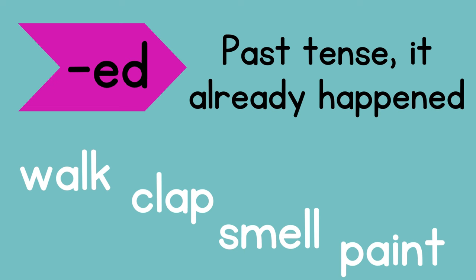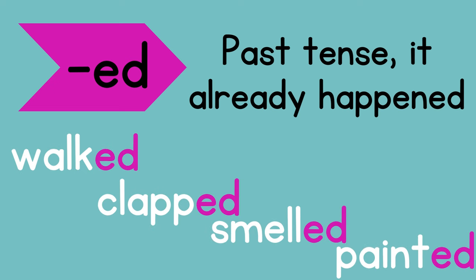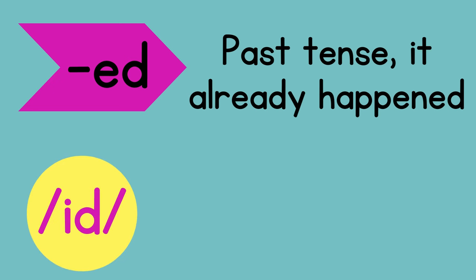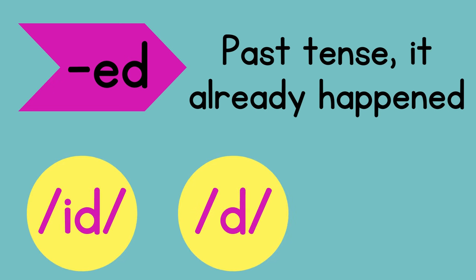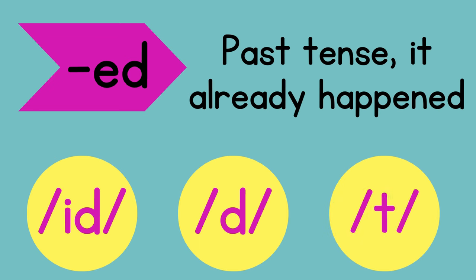So these verbs would be walked, clapped, smelled, and painted. Do you notice that they say different sounds at the end? Walked, smelled, and painted. The -ed suffix makes three sounds: -id, -d, and -t.